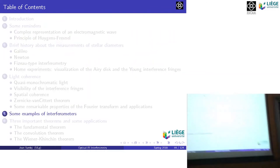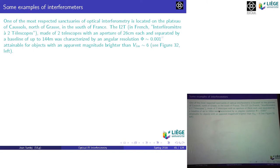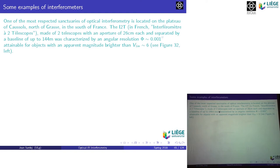Now I move to a new section: some examples of real interferometers. One of the most respected centers of optical interferometry is located near Nice, France, at Plateau de Cossoles. The I2T — interferometer with two telescopes — was made of two 26-centimeter telescopes separated by a baseline up to 144 meters. This was in 1975, and they achieved an angular resolution of 1 milli-arcsecond for objects brighter than limiting magnitude V=6.